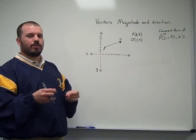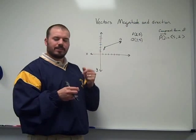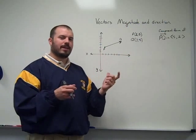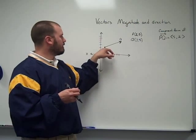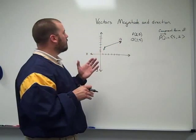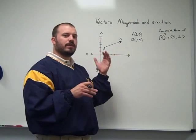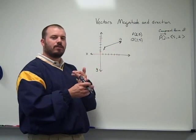But unlike a ray, if you're a geometry student, it doesn't go on forever. It has a set distance, and the distance really is the distance between P and Q. So vectors have two quantities that are associated with them: magnitude and direction.